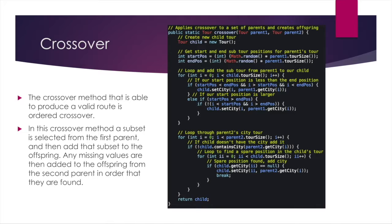For an example, the first parent contains 12345 and the second parent contains 54321. So this method will select a subset of 3 and 4 from the first parent. So the 3 and 4 will be set into the offspring array. Any missing values from the offspring will be added from the second parent. So the final child would be 52341.